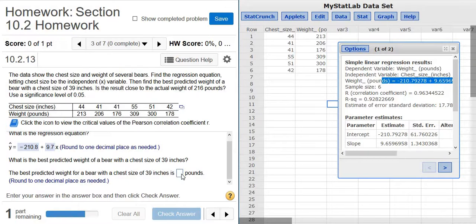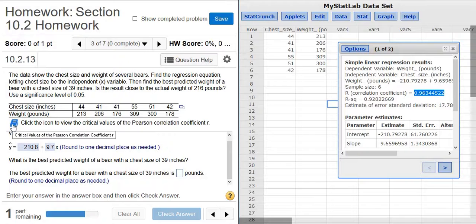So before you do this part, you first have to check to see if r is significant. So to do that, you look at r, here it is right here, 0.96. And then you have to use this table here to find the critical value. So n is 6.